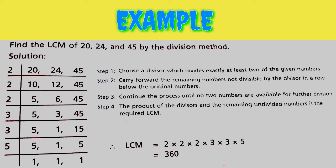20 and 24 are divisible by 2. Step 2: Carry forward the remaining numbers not divisible by the divisor in a row below the original numbers. At this step, 5, 3 and 45 are not divisible by 2.